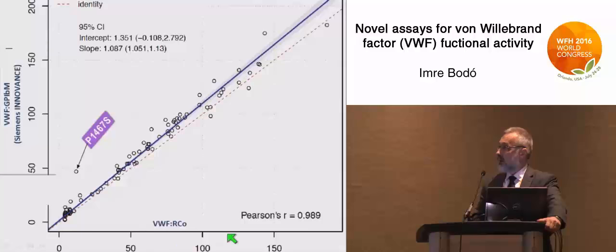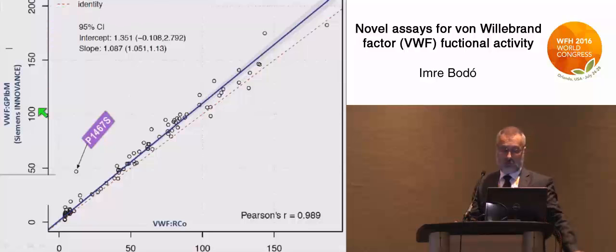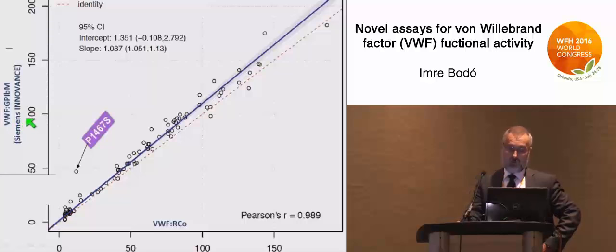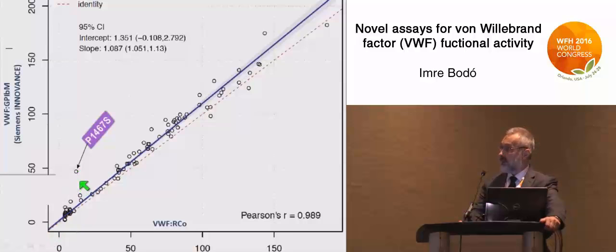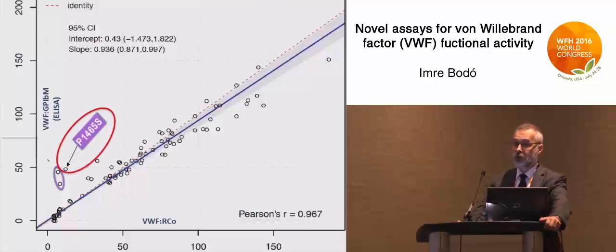This is the type of regression analysis from this exercise. On the x-axis is the old ristocetin cofactor assay performed by each laboratory, and each dot represents a mean of a sample across laboratories. On the y-axis is one of the newer assays — in this instance the Innovance, which is the GP1B-M assay. Notably, the 1467 variant is indeed low in the old assay at about 20%, whereas in the new assay it is close to 50%. So the false-low problem appears to have been solved.